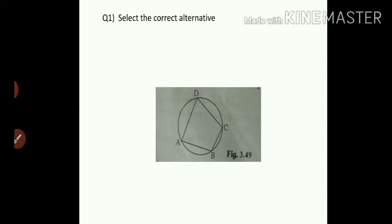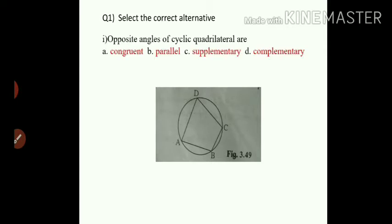Question number 1 is multiple choice — select the correct alternatives. Sub-question 1: opposite angles of a cyclic quadrilateral are: A) congruent, B) parallel, C) supplementary, D) complementary. We know opposite angles — angle A and angle C — satisfy angle A plus angle C equals 180 degrees, as they are supplementary. So option C is the correct option.